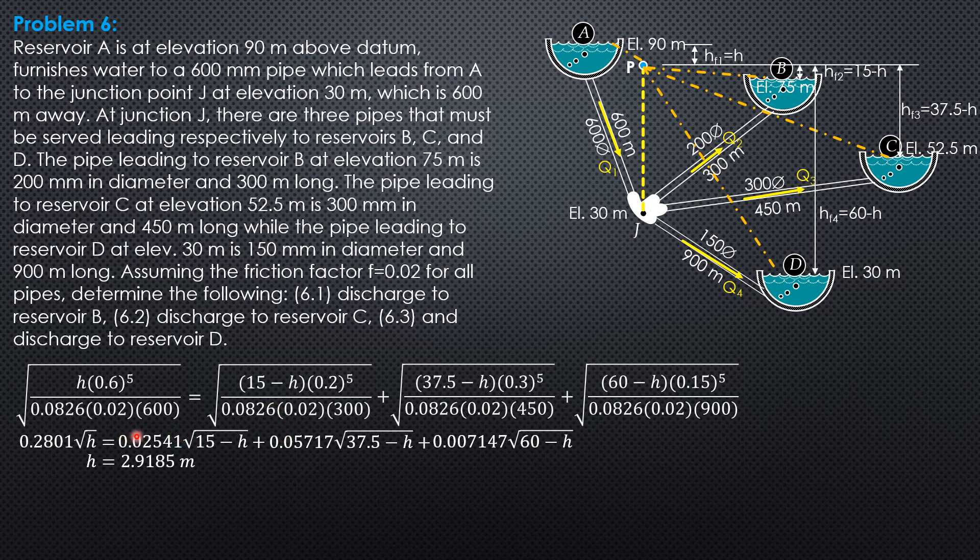Substitute here because this is Q2, the discharge to reservoir B. Q2 is 0.02541 square root of 15 minus 2.9185, so Q2 is 0.08832 cubic meter per second.